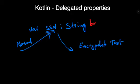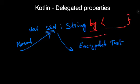Just by writing `by`, we can have a delegation class representation here. The keyword `by` is a keyword in Kotlin that represents the delegation. What we are doing is delegating an encryption logic to this delegator, and when we read from the property, we will get the encrypted text. Let's see that in action.